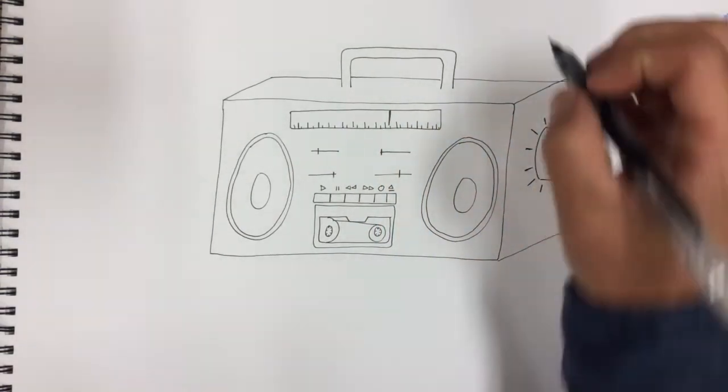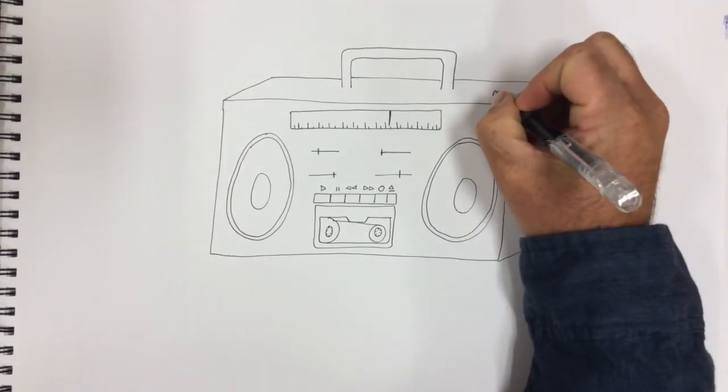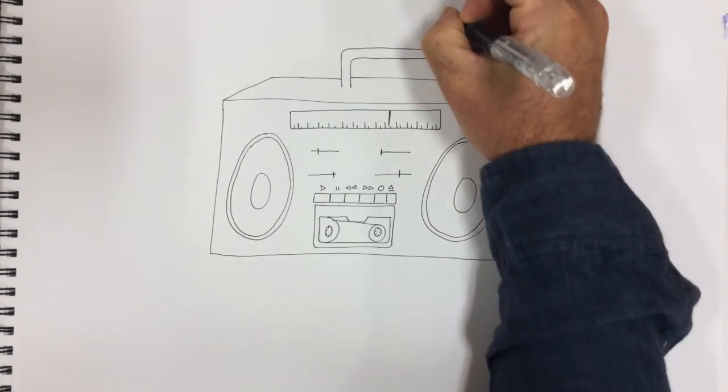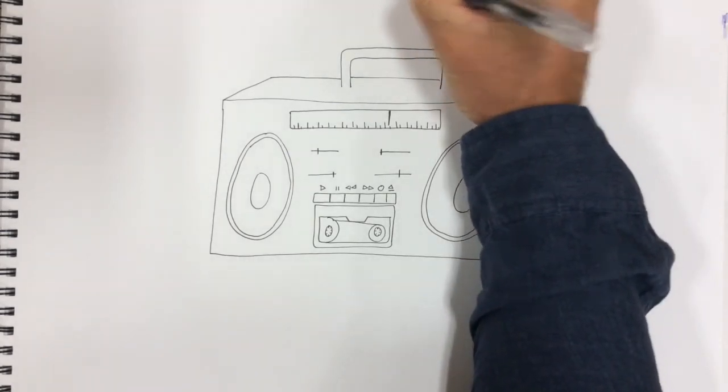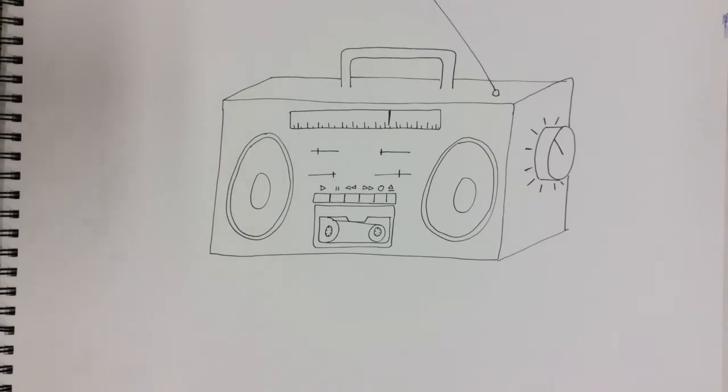And one last little touch. Let's do an antenna so we can get some radio stations. So put a little circle. A line. And you can finish it off with a little bump at the top. And there's our boom box.